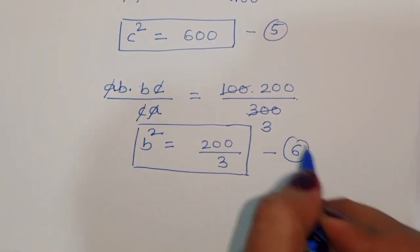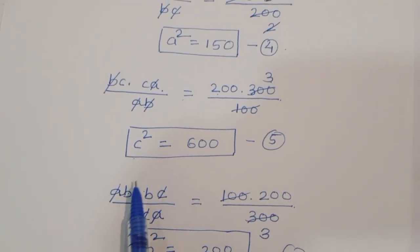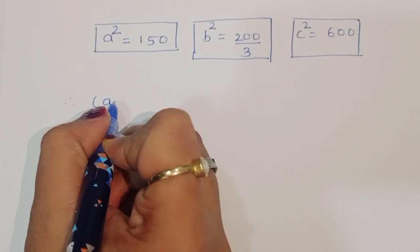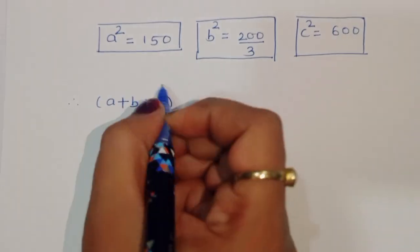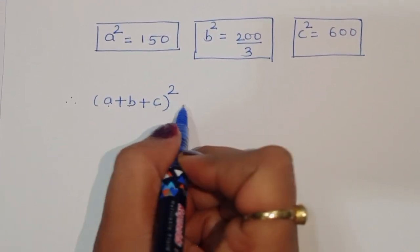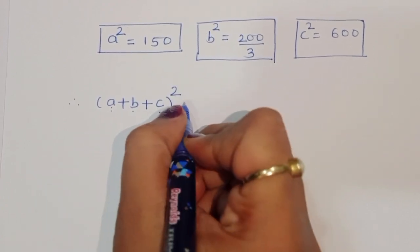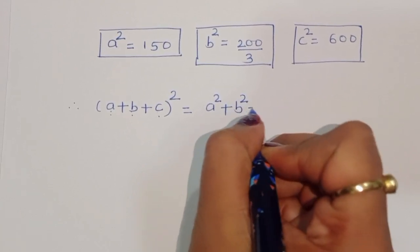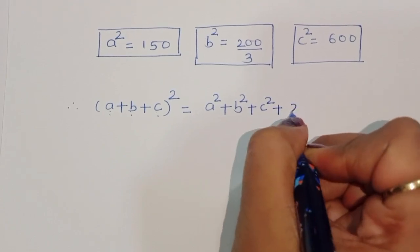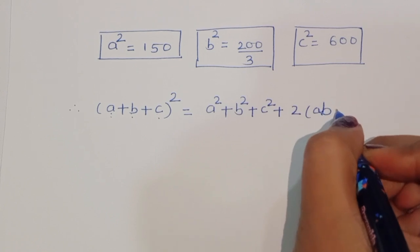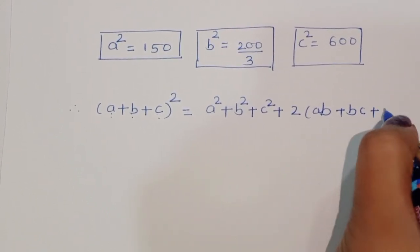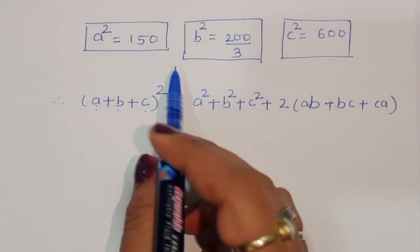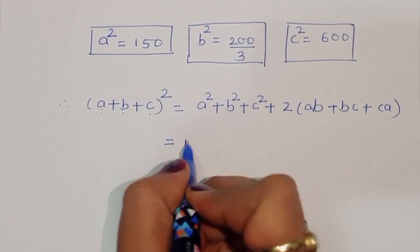In this way we got a squared, b squared, and c squared. Now we have to find the value of a plus b plus c. We consider a plus b plus c whole squared, which expands as a squared plus b squared plus c squared plus 2 times AB plus BC plus CA. This is the expansion formula. Now we substitute the values: a squared equals 150.